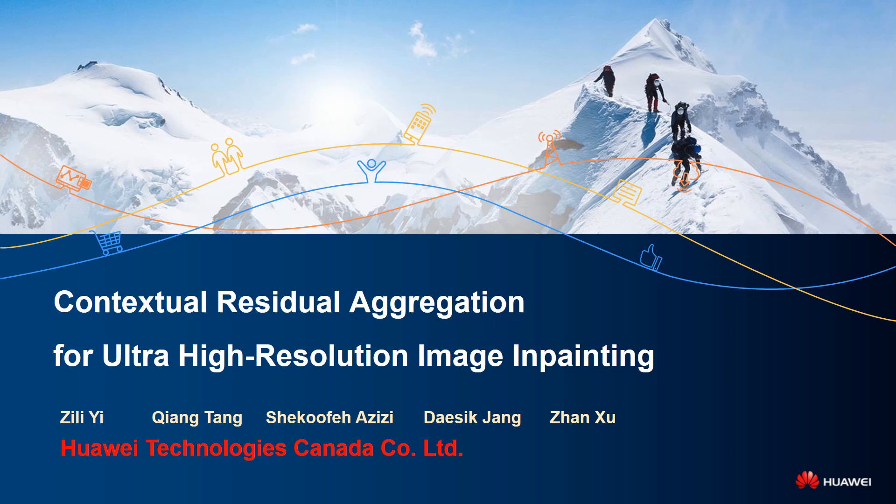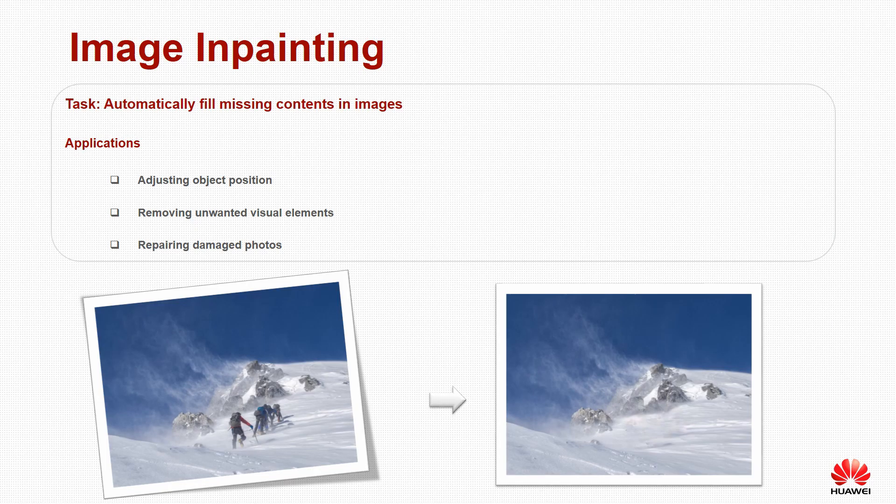Contextual residual aggregation for ultra-high-resolution image inpainting. Image inpainting is the task of automatically filling missing contents in images. The applications can include adjusting object position, removing unwanted visual elements, and repairing damaged photos.